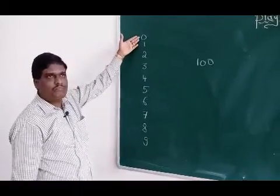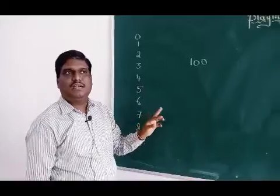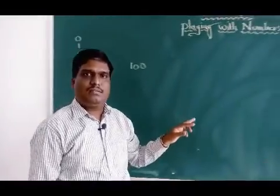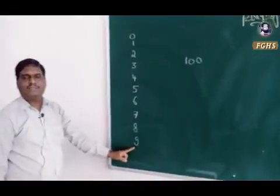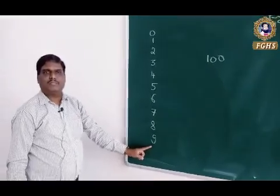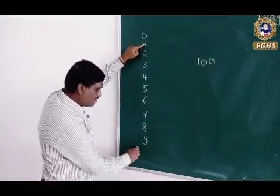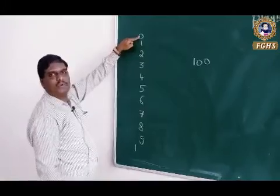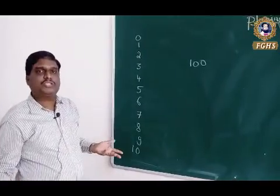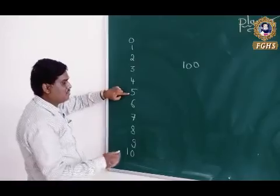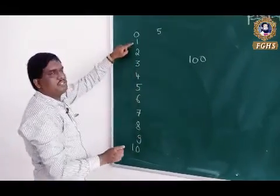To write the number 10, I write 1 followed by 0. Suppose I have to write 52, I use 5 followed by 2. These are things you have already learned in your first and second standard.